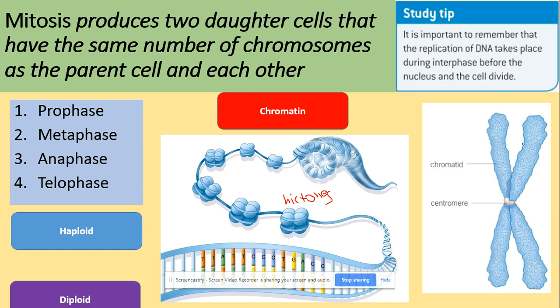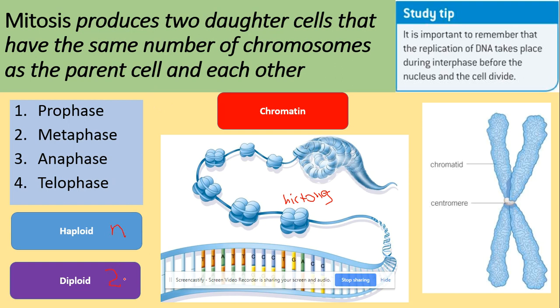There are two different types of cells in terms of chromosome number. A haploid cell, denoted N, contains one chromosome from each pair. A diploid cell, denoted 2N, contains two sets of chromosomes — one from each pair.